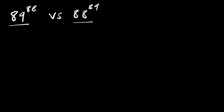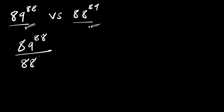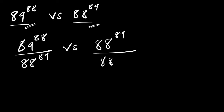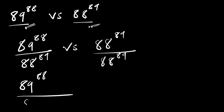What we can do is simply divide both by 88 power 89. So we have 89 power 88 divided by 88 power 89, versus 88 power 89 divided by 88 power 89, which gives us 1 on the right side.